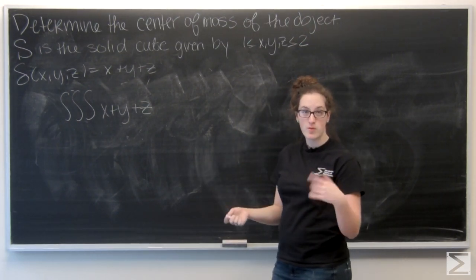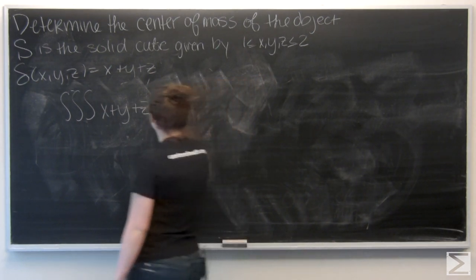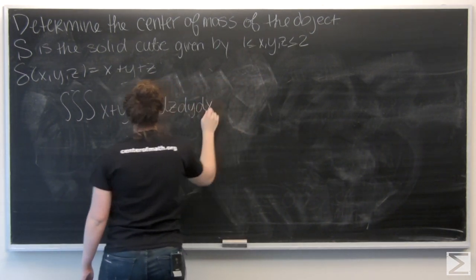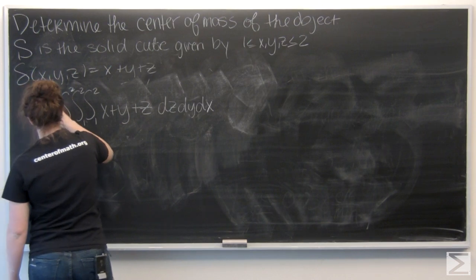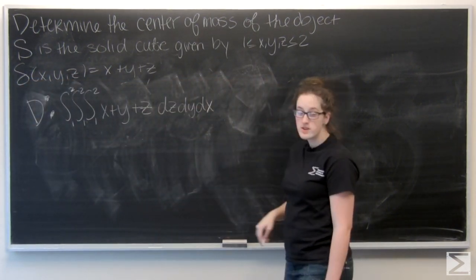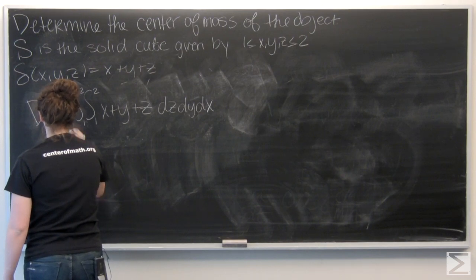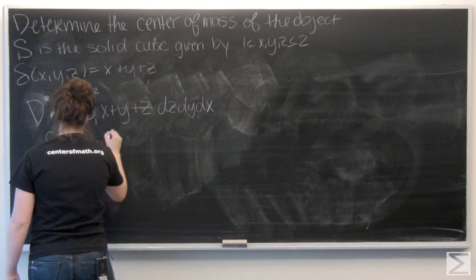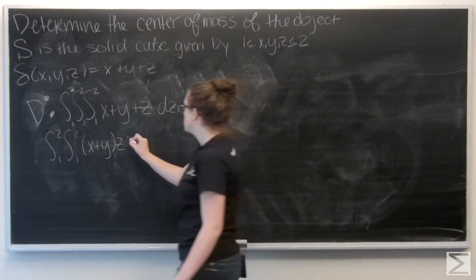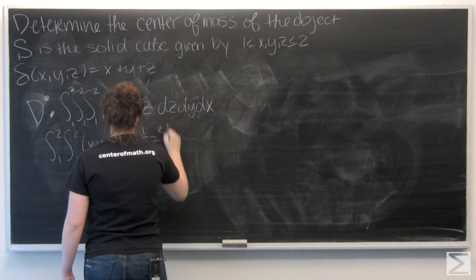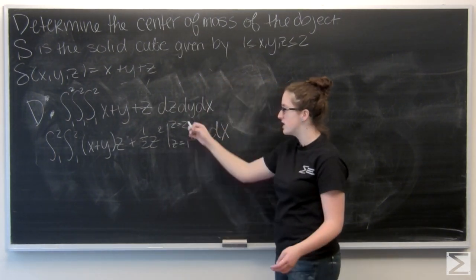x, y, and z all have the same bounds for this problem, from 1 to 2. So it doesn't really matter which order I integrate in. I'm just going to say dz dy dx. If I'm integrating with respect to z, x and y are both going to be constants. So when I integrate them, I'm going to get x plus y times z, and then z becomes one-half z squared.